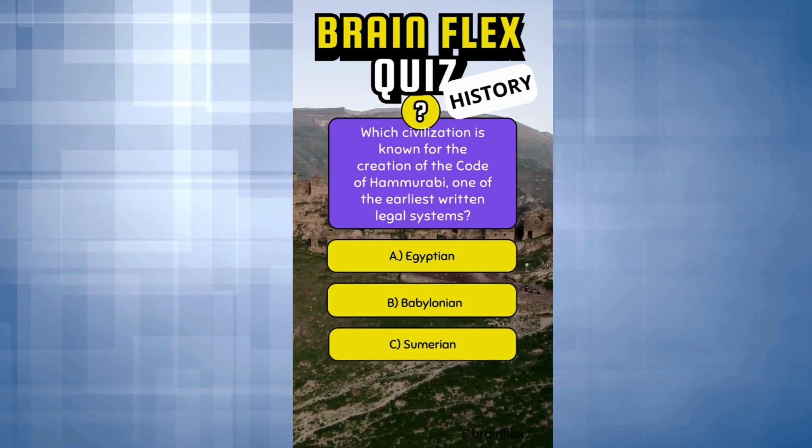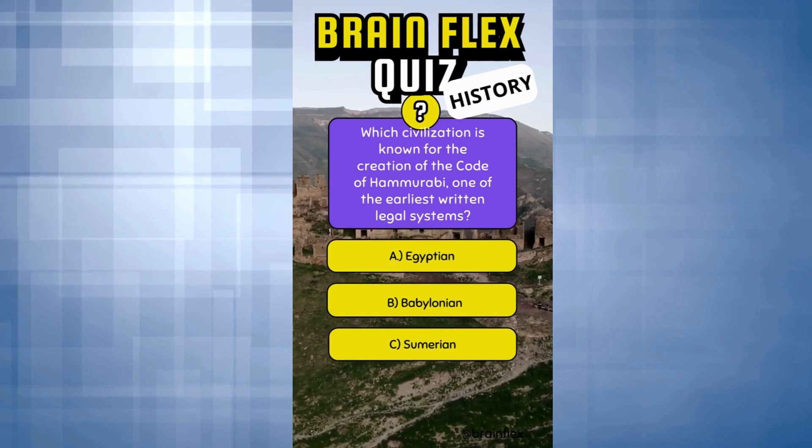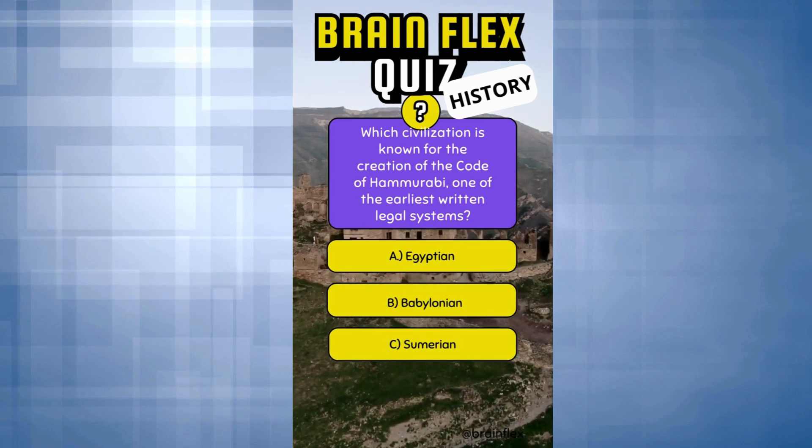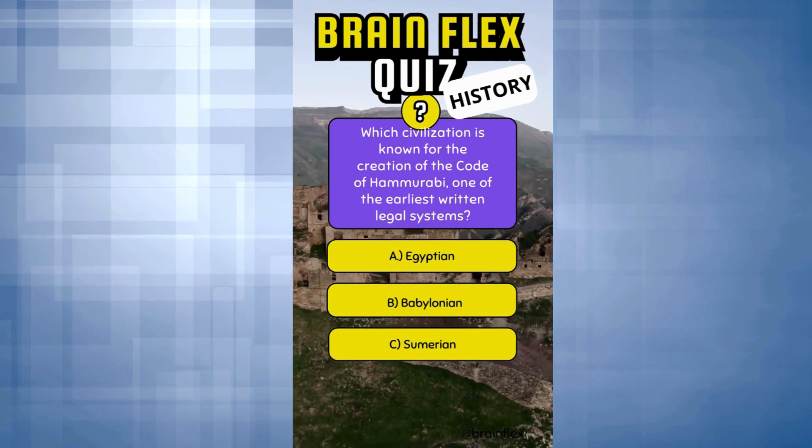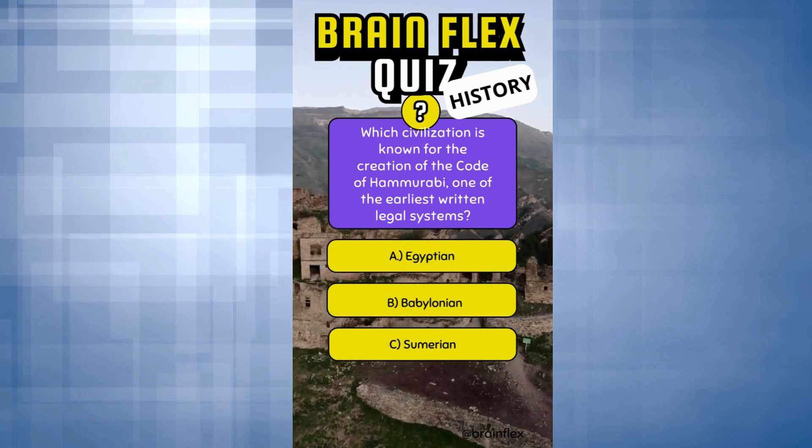Which civilization is known for the creation of the Code of Hammurabi, one of the earliest written legal systems?